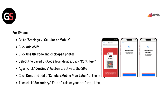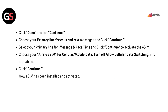For iPhone, go to Settings, then Cellular or Mobile. Click Add eSIM, then Use QR Code, and click Open Photos. Select the saved QR code from your device and click Continue, then click Continue again to activate the SIM. Click Done and add a cellular plan label to the newly installed eSIM, then click Secondary. Enter 'AirLo' or your preferred label, click Done and tap Continue. Choose your primary line for calls and texts, select your primary line for iMessage and FaceTime, then choose your AirLo eSIM for cellular data. Turn off Allow Cellular Data Switching if enabled, then click Continue. The eSIM is now installed and activated.